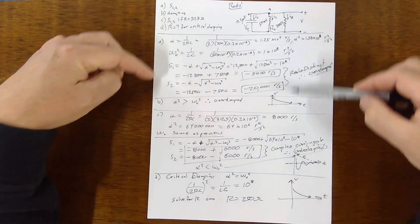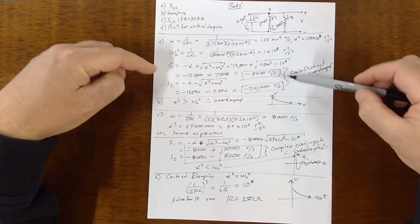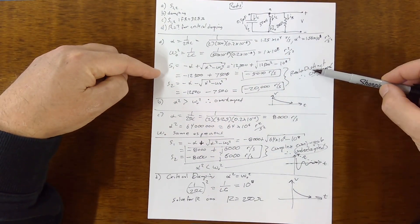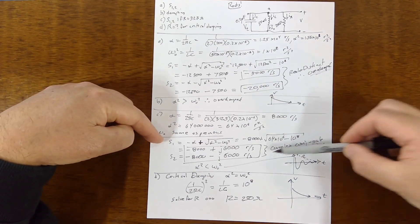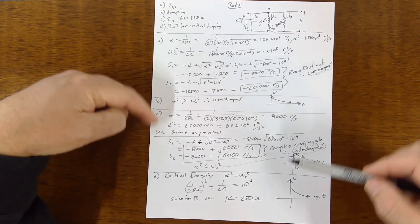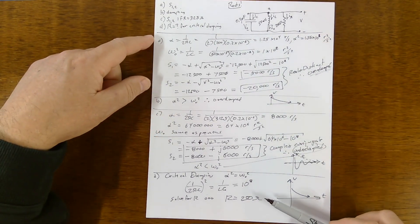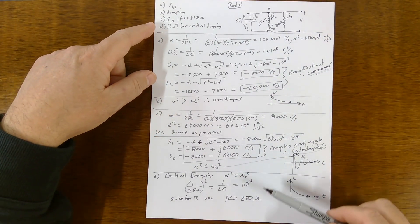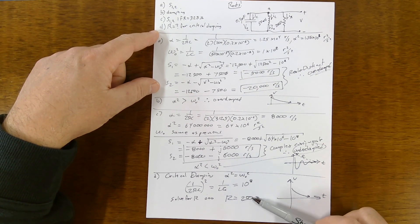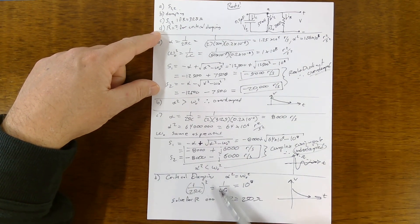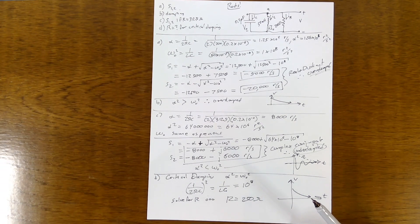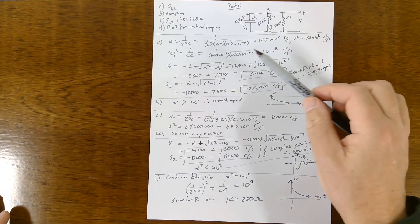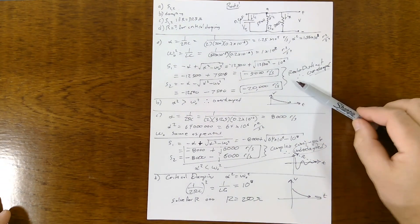That was a review of playing with the roots and comparing real and distinct values, complex conjugate values, and the equal condition for critical damping — a straightforward but worthwhile problem.